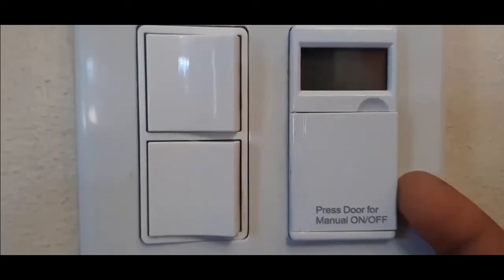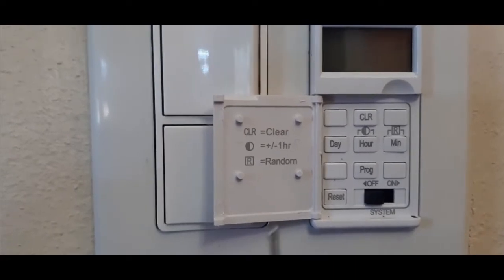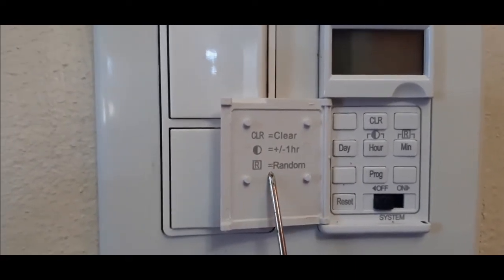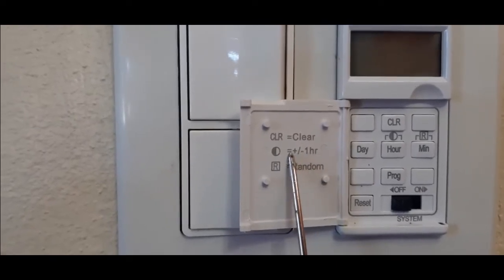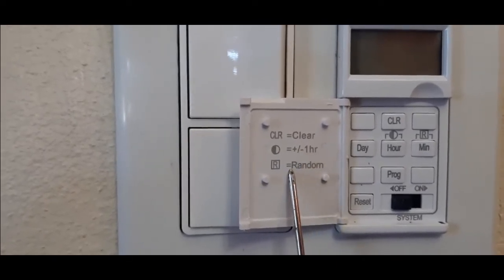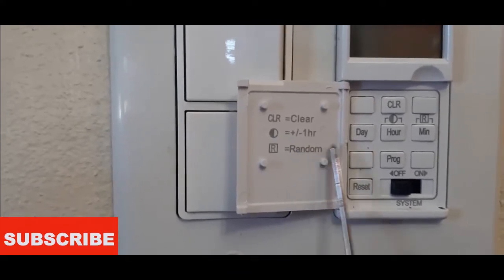On the door itself, you will see icons showing what represents what. Plus and minus—if you want to add an hour, minute, whatever it is. And there's a random function where you can have the lights on and off anytime you want at a random time.